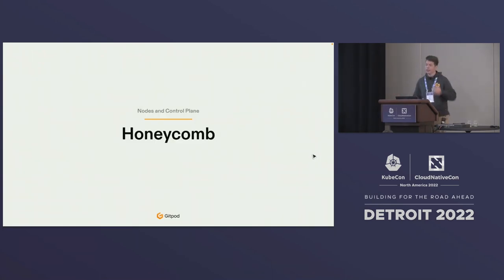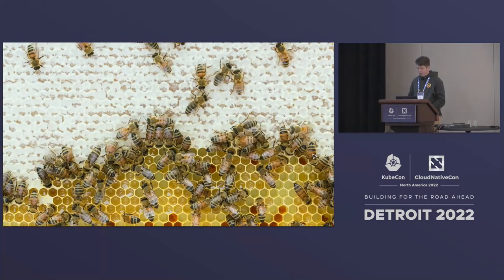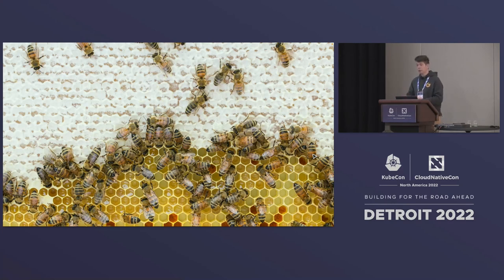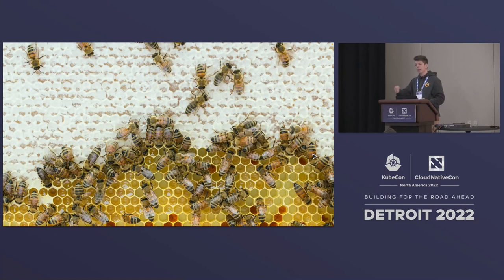Honeycomb is a great segue — it's essentially our nodes and control plane in one. In Kubernetes we have multiple nodes and a control plane that controls it all. Honeycomb acts as both. It's literally the thing that bees run on. It's also where they collect and store nectar and turn it into honey. Bees don't actually collect honey — they collect nectar and then turn it into honey. Nectar has about 80% moisture content, whereas honey has about 18% water content. Honey has also passed through bees multiple times, and each time they add enzymes that make it more durable and antibiotic.